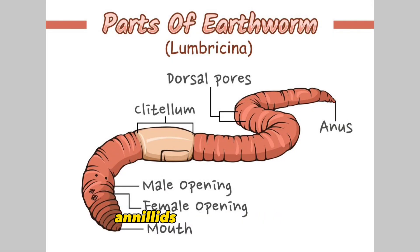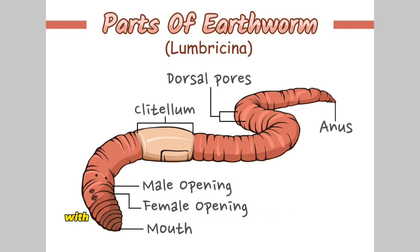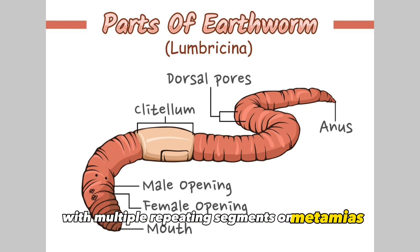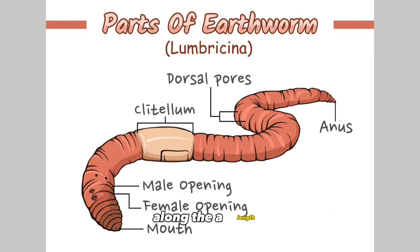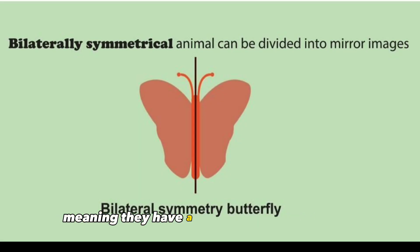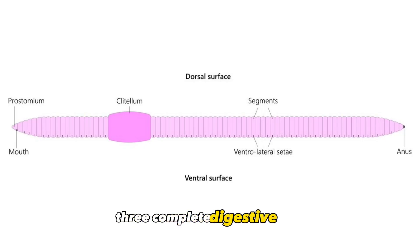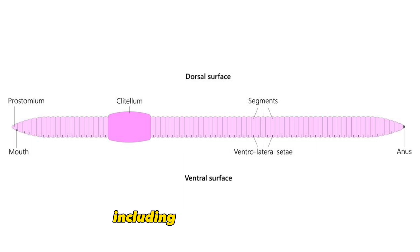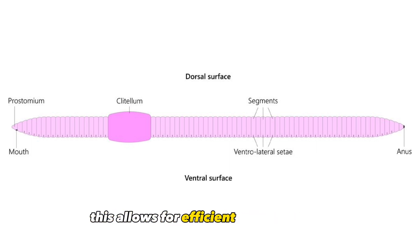Segmented body: Annelids are characterized by their segmented body plan, with multiple repeating segments or metameres along their length. Bilateral symmetry: They exhibit bilateral symmetry, meaning they have a distinct right and left side. Complete digestive tract: Annelids possess a complete digestive tract, including a mouth and an anus. This allows for efficient food ingestion and waste elimination.